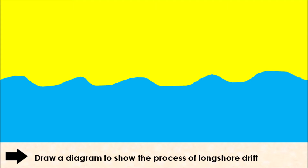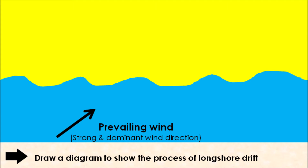When it comes to longshore drift, we start with a prevailing wind direction — your strongest, most dominant wind direction approaching your coastline. This prevailing wind encourages waves to wash up onto the beach through the process known as swash. When waves approach the beach at an angle, we call this swash. They may pick up sediment and move it onto the coastline before the wave retreats at a 90-degree angle back into the sea, which we call backwash, potentially taking sediment with it.